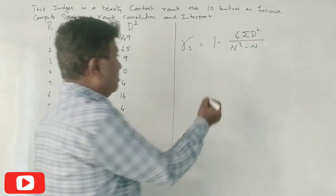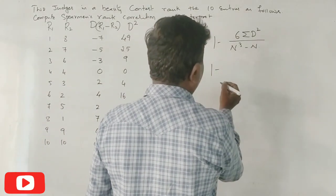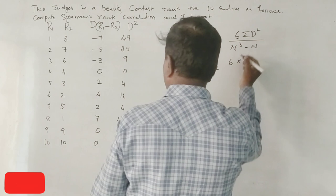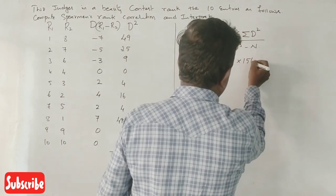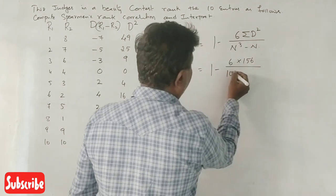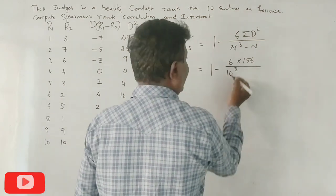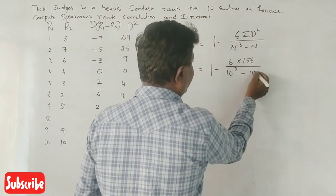Correct? Now the formula: 1 minus 6 times summation d squared which is 156, divided by 10 cubed - where n is the number of observations, which is 10 - 10 cubed minus 10.